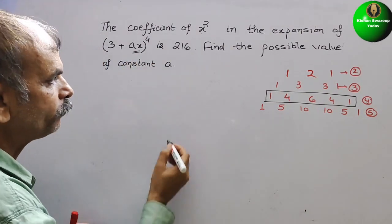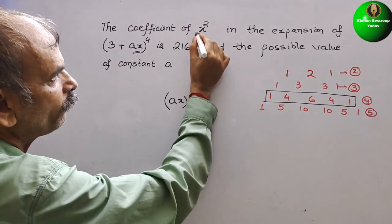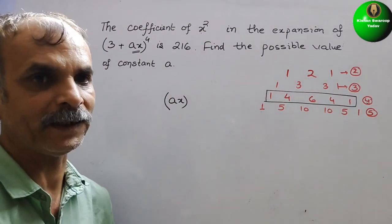So second term, that is your ax. And to get x², we have to square it.